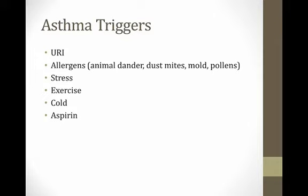Common triggers for asthma include upper respiratory infections — it's very common for kids with asthma to get a cold and then have an asthma exacerbation. Allergens like animal dander, dust mites, mold, and pollen can trigger asthma, as can stress, exercise, and cold. There is also an important but relatively rare subclass called aspirin-exacerbated respiratory disease.